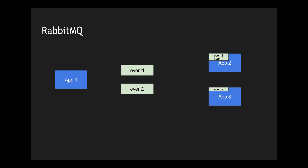In RabbitMQ, you create consumer queues for each consumer. For application 2, I configure the queue to use both event 1 and event 2. For application 3, I configure it to receive only event 2. This way I can decouple my routing logic within the platform and don't need to handle this on the consumer side.